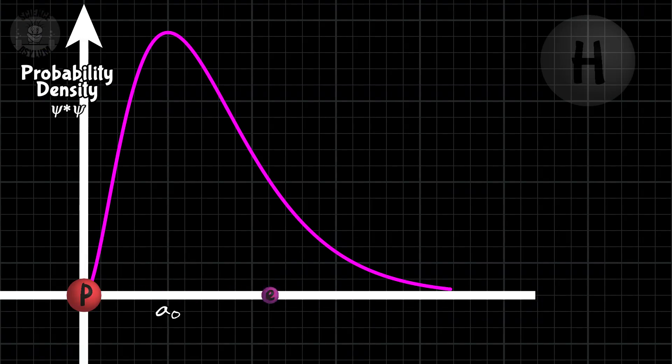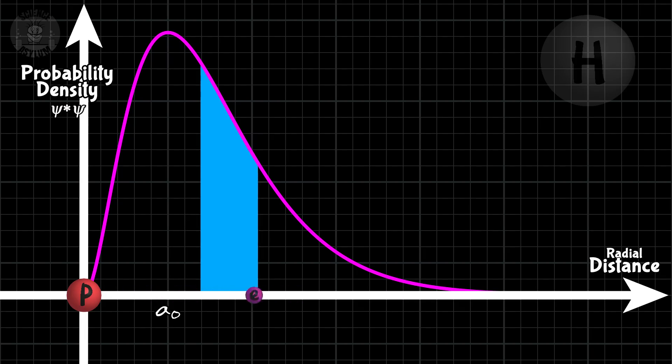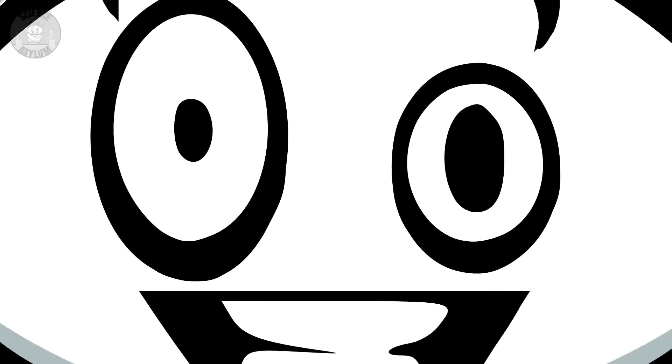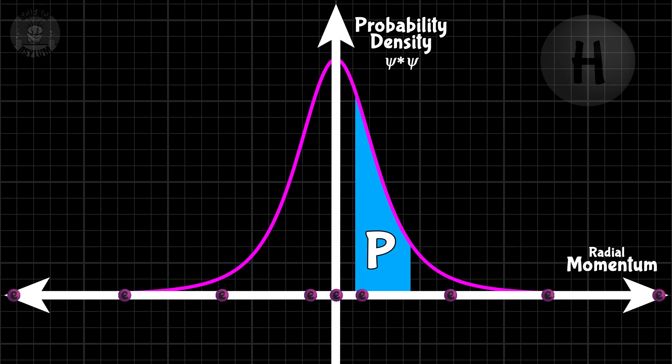Here's a more accurate probability density for the electron in a hydrogen atom. The input is the distance from the center of the atom. Just like before, any shaded area gives you the probability of finding the electron within that range of distances. If you transform it so that momentum is your input, you can find the probabilities for momentum instead. See, no infinities this time.